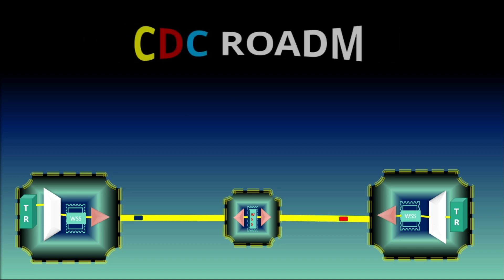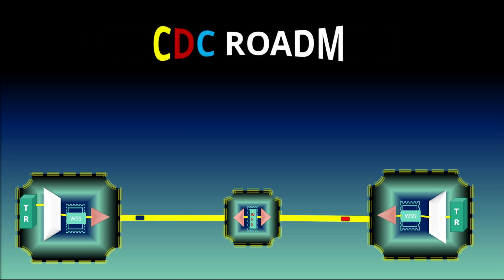In CDC ROADM Network, this video explains the first C, which is colorless, and discusses the operational benefits it provides.